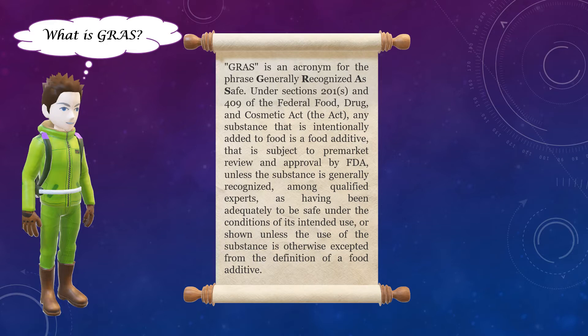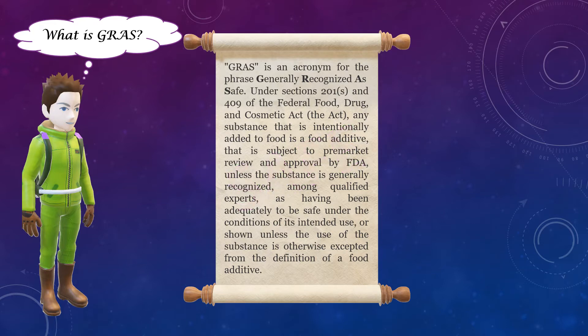However, the FDA has released a list of substances which do not require its approval for every food item, as they have been by default considered as safe. With growing advancement in biotechnology, a number of consumable products are synthesized using various organisms. In this context, the FDA has prepared a list of organisms which are recognized as safe for use by various companies to produce consumable products without FDA intervention. These organisms are called GRAS-listed organisms.